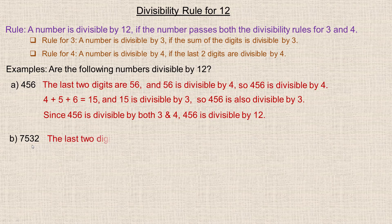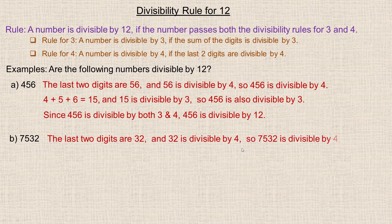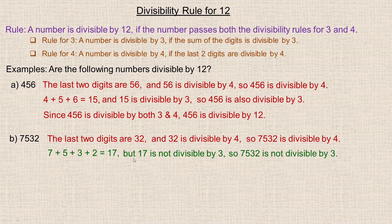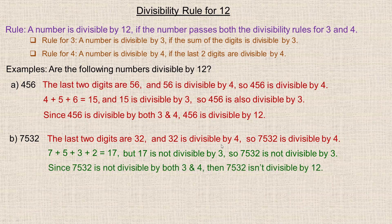Let's look at the next one: 7532. The last two digits are 32, and 32 is certainly divisible by 4 — 8 times 4 is 32. So 7532 is divisible by 4. Now let's check for 3: we add 7, 5, 3, and 2, which gives 17. And 17 is not divisible by 3. So 7532 is not divisible by 3. Even though it's divisible by 4, it's not divisible by both 3 and 4, so 7532 is not divisible by 12.